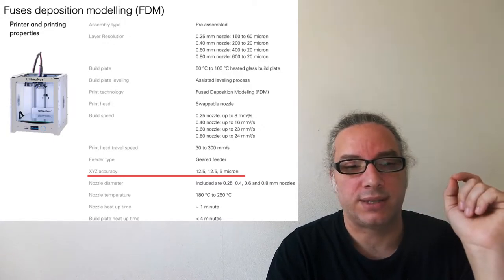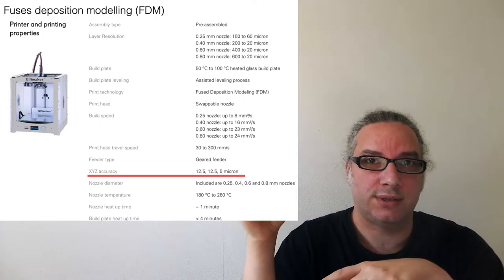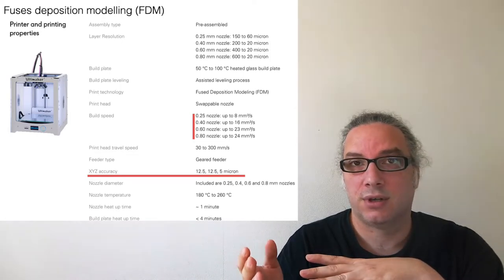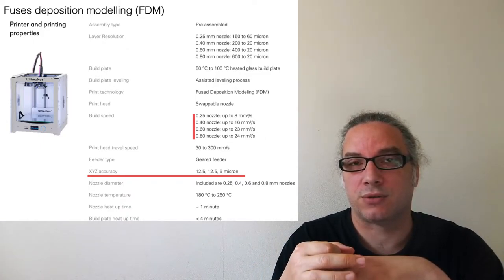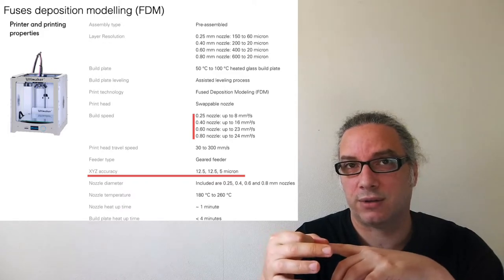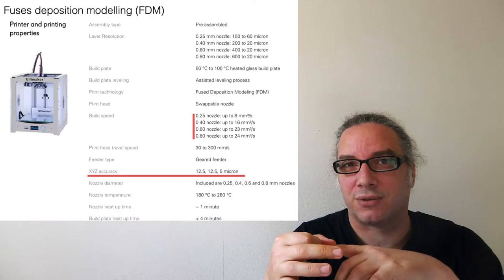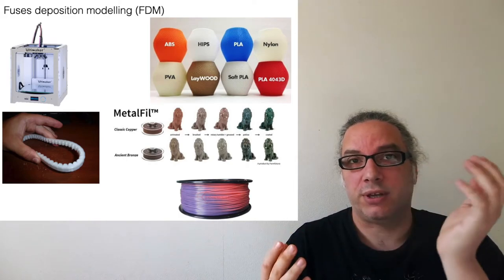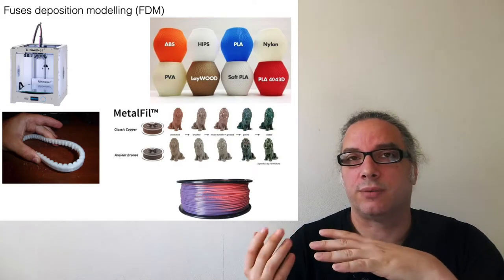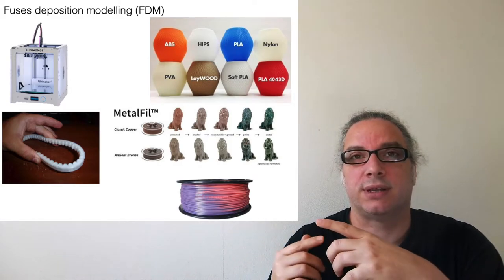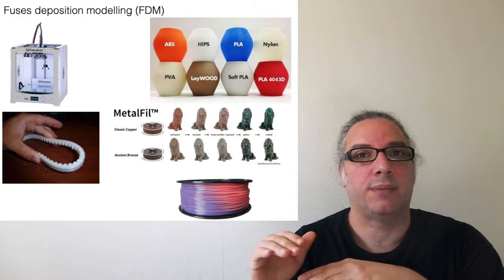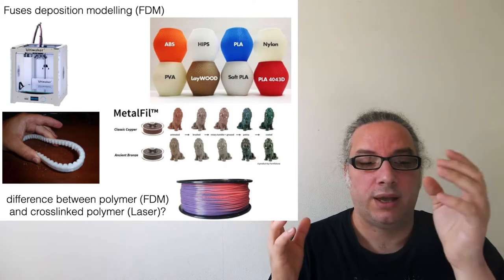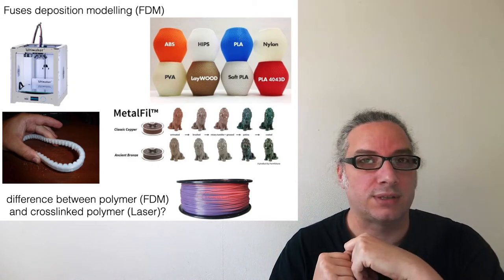The Ultimaker states an accuracy of around 12 microns, but this is the accuracy of the motors, not of the final 3D printed part itself. If you check the nozzle — where you squeeze your plastic — the minimum nozzle size is 250 microns. This means the minimum line width must be 250 microns. So even if I manage to move the motor by 10 microns, it doesn't mean anything because the nozzle is still 250 microns. The minimum feature must be at least 250 microns.